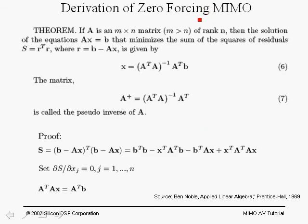Before we proceed, let's present a theorem. If A is an M by N matrix — where in our case for a 2 by 3 system, M equals 3 and N equals 2, N being the number of transmit antennas and M the number of received antennas — then A is typically a rectangular matrix, not necessarily square. Consider the case where A is M by N with M greater than N, and its rank is equal to N.